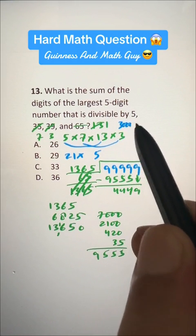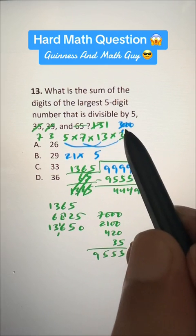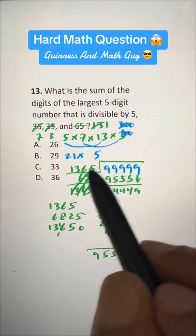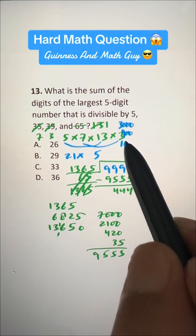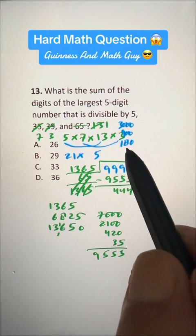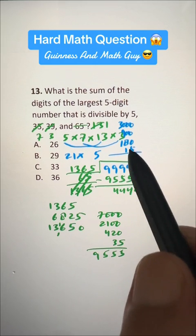3 times 1 is 3, so it's 3000, and 3 times 3 is 9, so it's 900. 3 times 6 is 18, so it's 180, and 3 times 5 is 15.